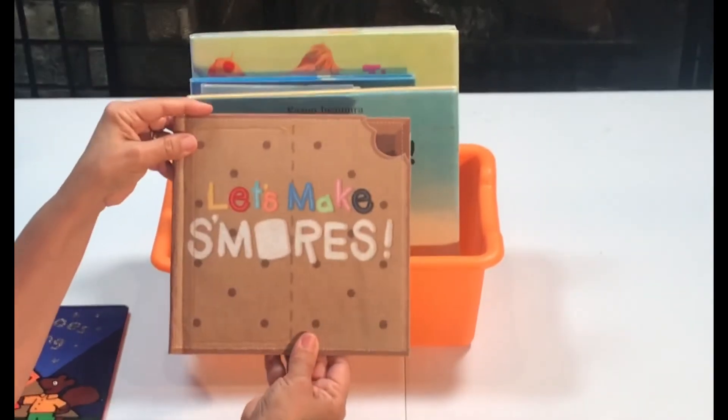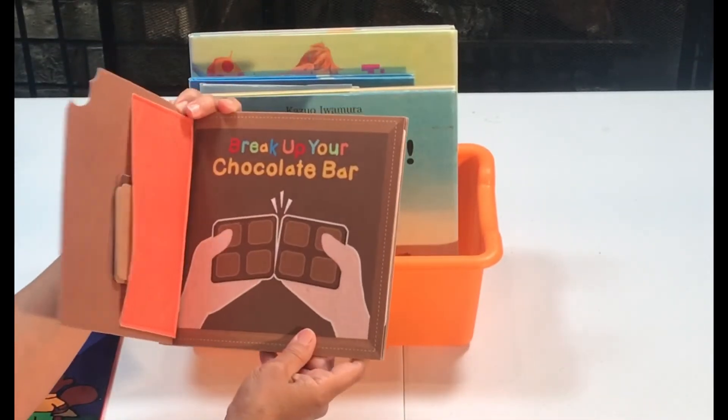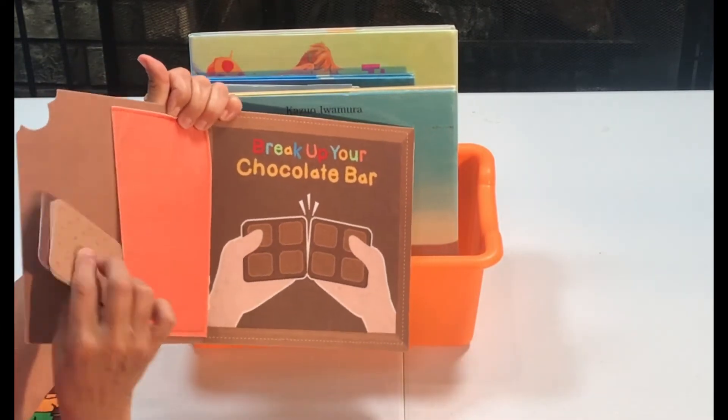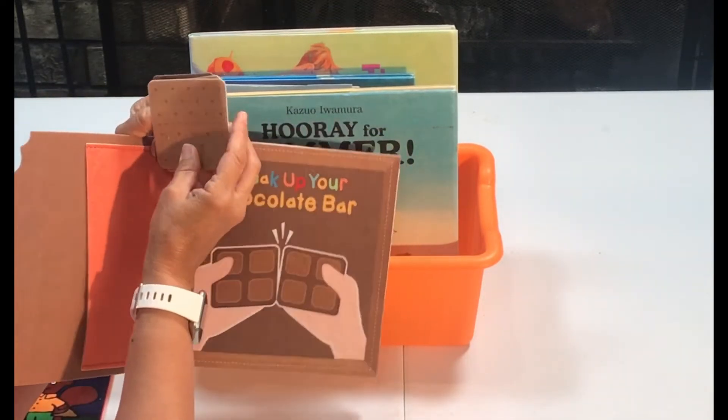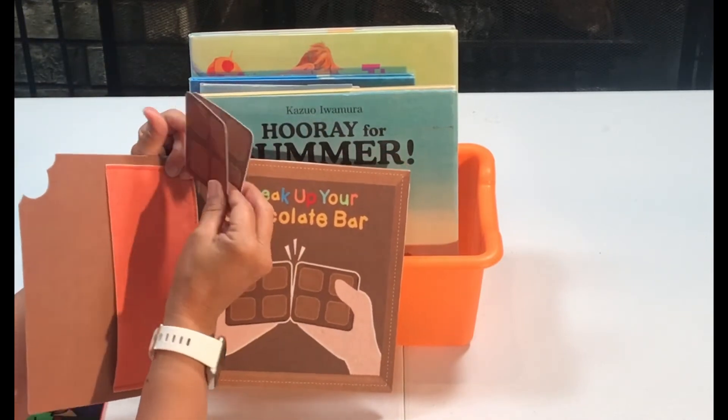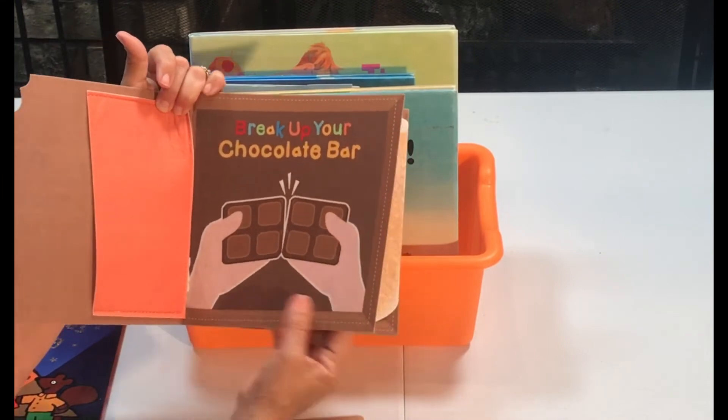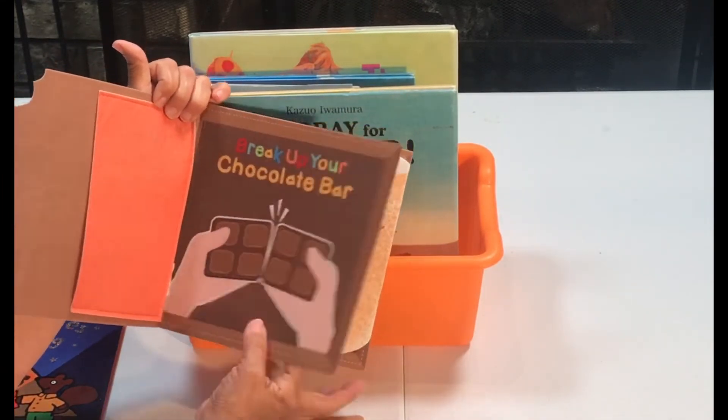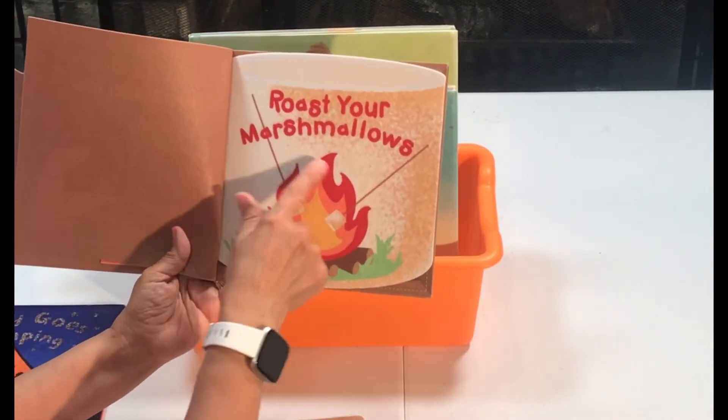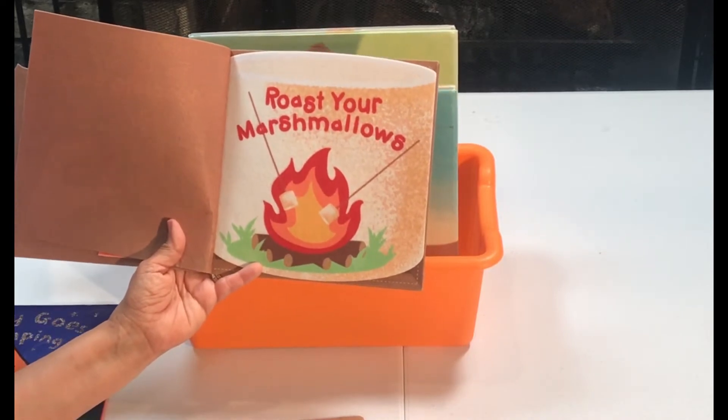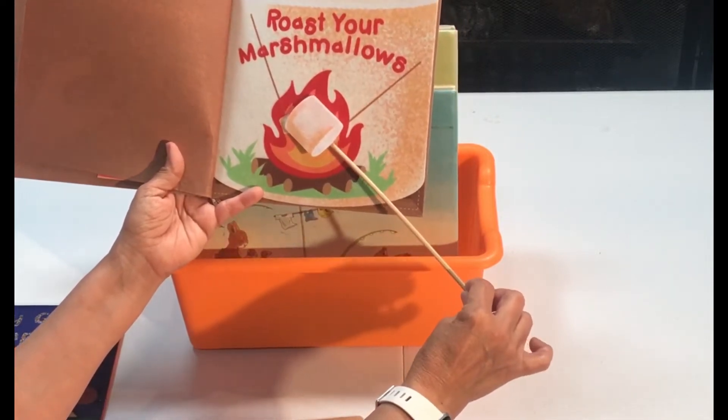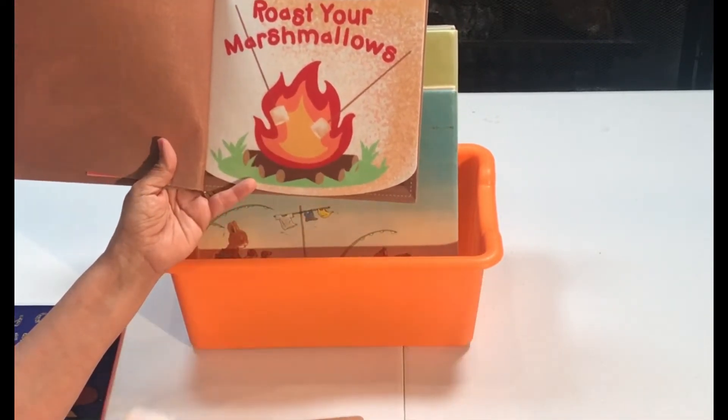This book I found at Target in their learning bins and it's called Let's Make S'mores. It comes with these little felt pieces. It has the crackers and the chocolate and the marshmallow and gives instructions how to make the s'mores. It also has a page where we're going to roast the marshmallows. So the little marshmallow I put it on a stick and we're going to roast marshmallows and make our s'mores.